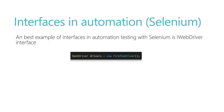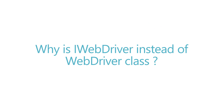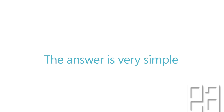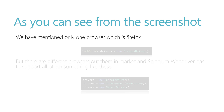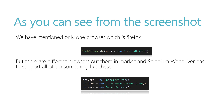In Java there is no such naming convention — it's going to be just WebDriver. So why is it IWebDriver instead of a WebDriver class? The answer is simple: there are different browsers out there and Selenium WebDriver has to support all of them — something like ChromeDriver, Internet Explorer driver, and Safari driver. Since there are different kinds of browsers available, the interface comes into picture.